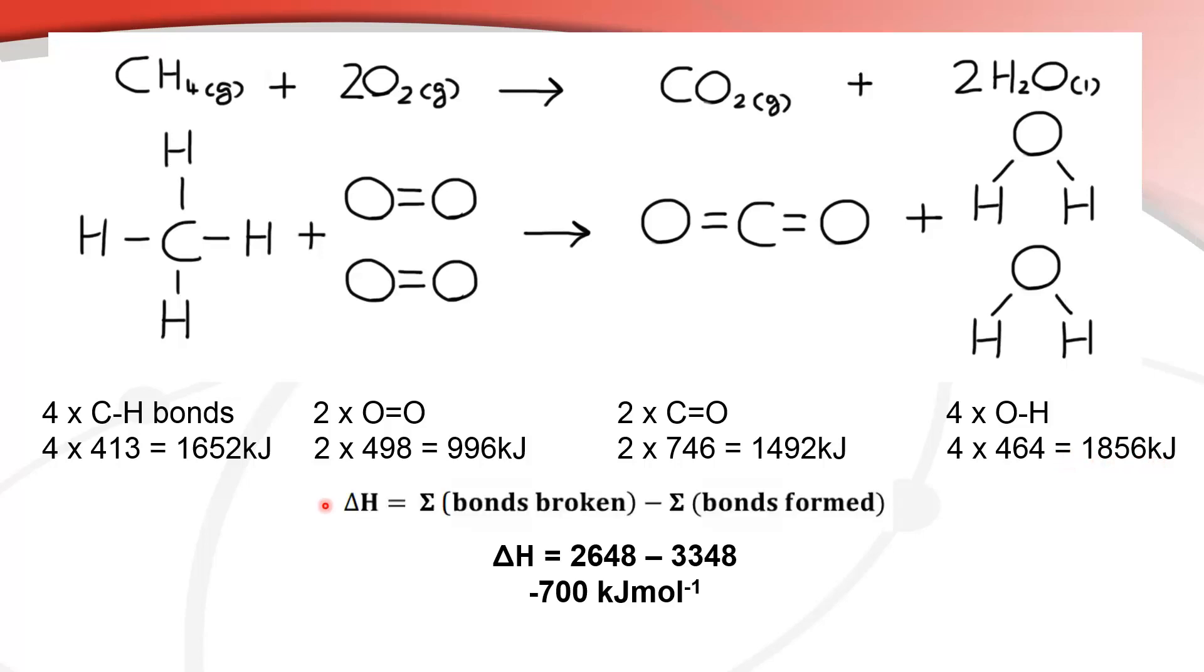So next I'm going to use this equation here, the change in enthalpy equals sum of the bonds broken minus the sum of the bonds formed. So all these bonds on the left side of the arrow, they are being broken, and all these bonds on the right side of the arrow are being formed. So you add up the totals for the left side and you subtract it from the total of the right side.